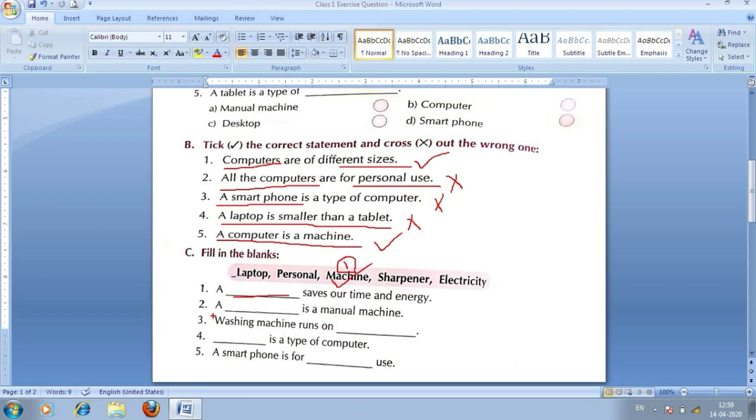Second one is, a dash is manual machine. Yaani ke manual machine hai. Toh second mein hojaye ga hamara sweeper. Sweeper jo hota hai babu, hamara, ye manual machine hota hai. Toh, ye, mera hojaye ga. Two number hojaye ga. Yahaan pe haam fill kar dhenge.